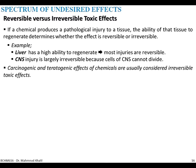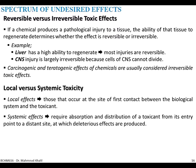Carcinogenic and teratogenic effects of chemicals are usually considered irreversible toxic effects. For local versus systemic toxicity: local effects occur at the site of first contact between the biological system and the toxicant, while systemic effects require that the toxicant be absorbed and distributed from its entry point to a distant site where the effects are produced.